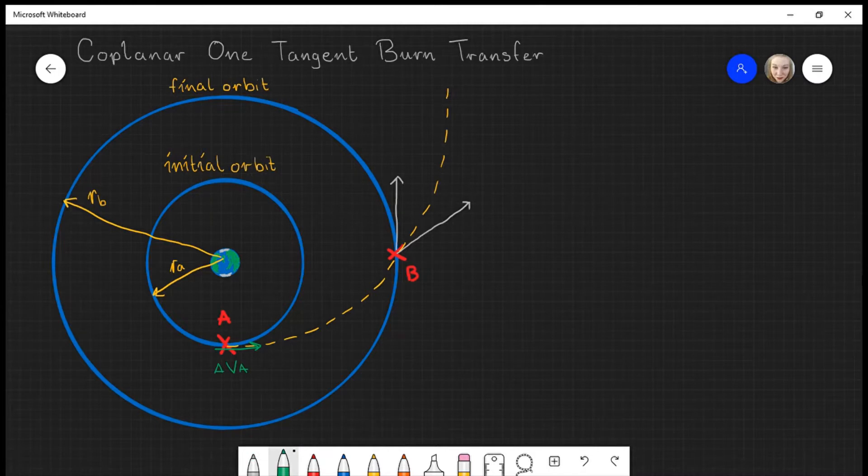Delta V_B can be found here. Now between the tangent to the circle and the tangent to the ellipse, there is an angle.